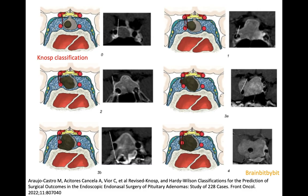There have been different classification systems, and the one we use in our hospital is the Knosp classification. You look at the macroadenoma and its relation to the carotid artery to predict whether there is invasion of the cavernous sinus or not. In the lower grades there is definitely invasion, and in other cases it is more debatable.